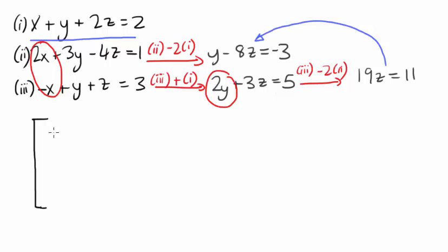First, we write down the x coefficients, then the y coefficients, and the z coefficients. We also need to know what the constant terms on the right side are. And I'll separate these from the left-hand side of the equation by a dashed line. This table of values is called the augmented matrix.